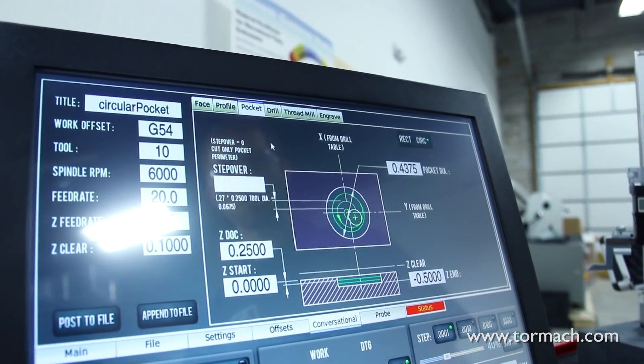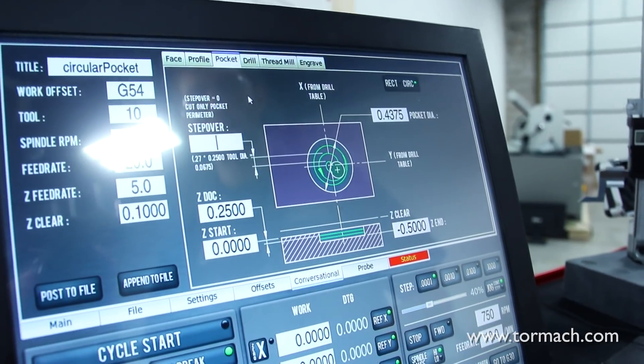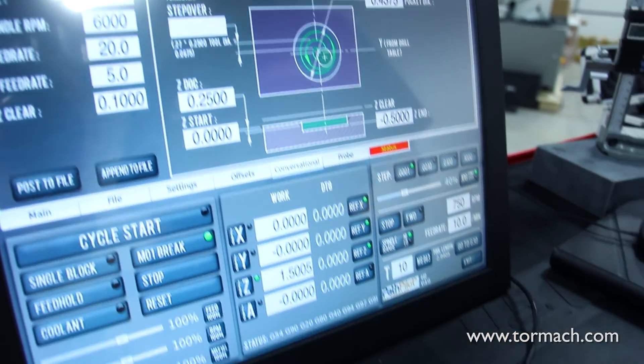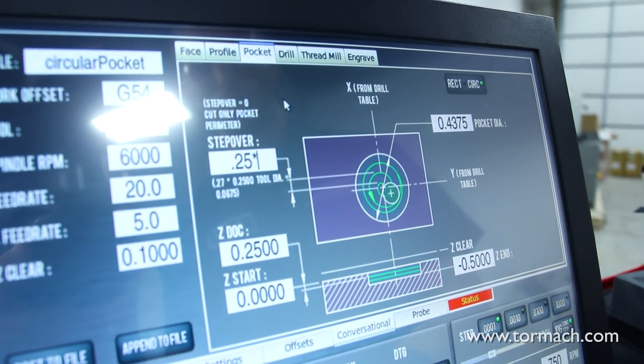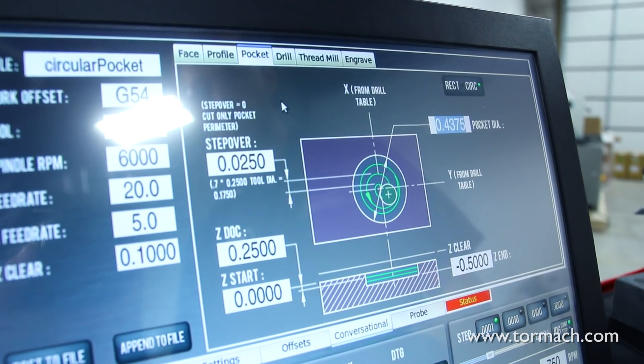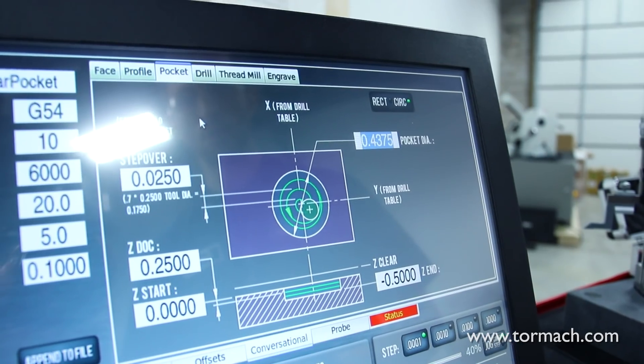Our step over, I'm going to take a pretty small step over on this. I like to do anywhere from 10 to 30 percent. Just for the sake of showing it, we'll do 10 percent to show you that we can do the math right in the window. We'll say 0.25 times 0.1, gives us our math. It gives you that ability to do the math pretty easily.